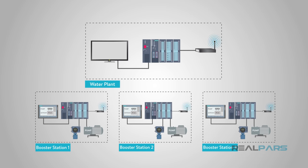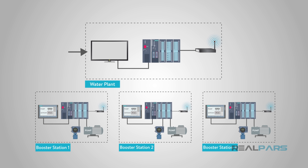Each booster pump station within the water district was represented on the screen. At each location, there was a PLC that was connected to some sensors to monitor water flow, pressure, and other things, and it was able to run and control the pump itself. The remote SCADA unit was connected to the PLC system and allowed operators to control and monitor each pump station from the main plant.